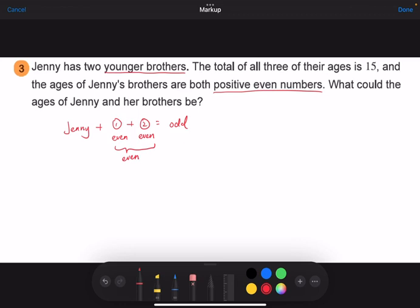So Jenny's age plus an even number is an odd number. So that means Jenny's age must be an odd number. This is odd even number analysis. We've done this in the previous lesson, lesson one.